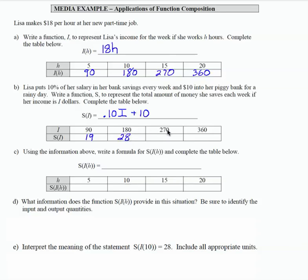270 times .10 plus 10 is 37, and 360 times .10 plus 10 is 46. And you can do all of those on your calculator or in your head, whichever makes the most sense, but just write them out as we have here.